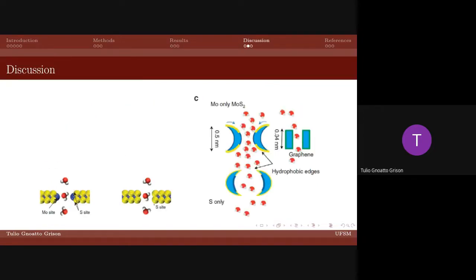The explanation for these results given by the authors is that the hydrophilic and hydrophobic nature of the two atomic types justify the results. As we see in this picture, the sulfur-related edges would be hydrophobic and therefore deflect the water molecules in the molybdenum type pore into the center of the pore and in the sulfur type pore out of the pore.